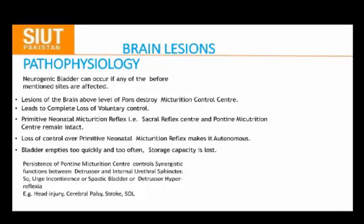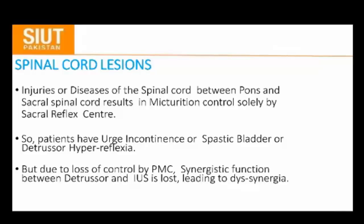With loss of cortical control, the micturition reflex becomes autonomous and bladder storage capacity is lost. In brain lesions such as head injury, cerebral palsy, stroke, and space-occupying lesions: detrusor hyperreflexia and spastic sphincter hyperreflexia are seen. In spinal cord disease above the sacral level, micturition is controlled solely by the sacral reflex centre, giving detrusor hyperreflexia. Due to loss of control by the pontine micturition centre, the synergistic function between the detrusor and urethral sphincter is lost.